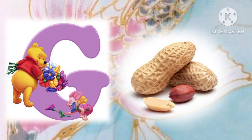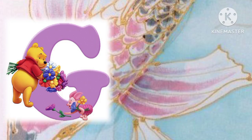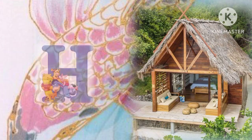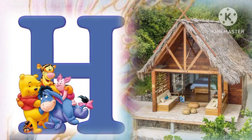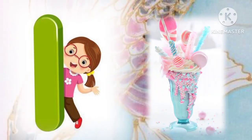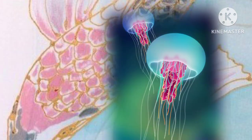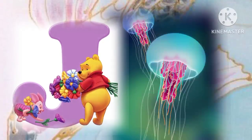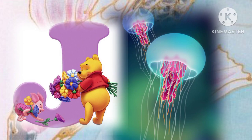G for groundnut, H for hut, I for ice cream, J for jellyfish.